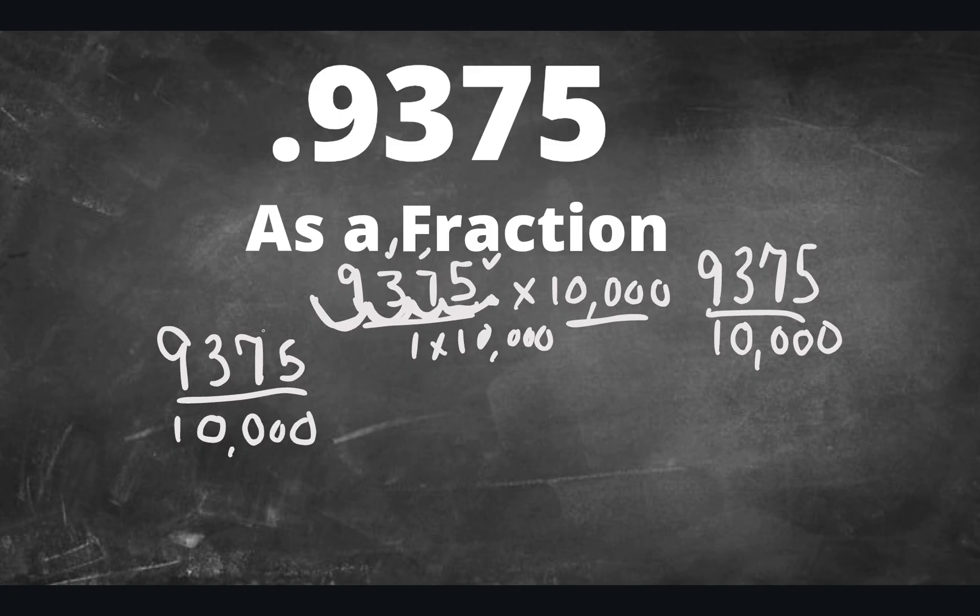I know that since it ends in 75, it's divisible by 25. When you divide 9,375 by 25, you get 375. And 10,000 divided by 25 is 400.